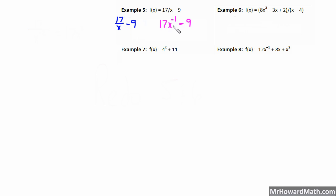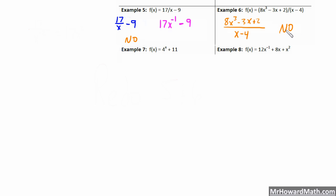Example 6: we have 8x cubed minus 3x plus 2, all over x minus 4. This is a rational expression because we have one polynomial divided by another. So no, it is not a polynomial — it's a rational expression. You can also see we have a variable term in the denominator raised to a positive power, so that's out too.